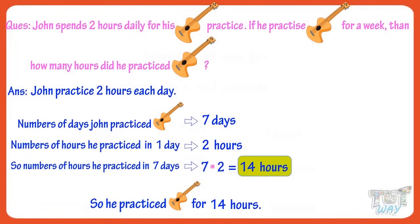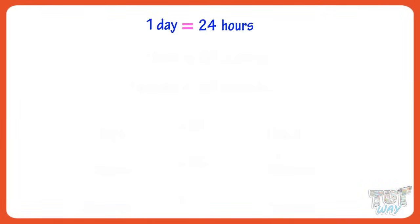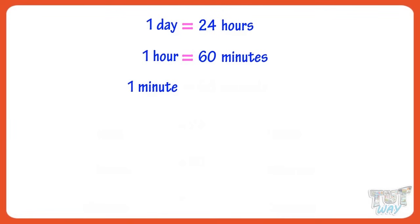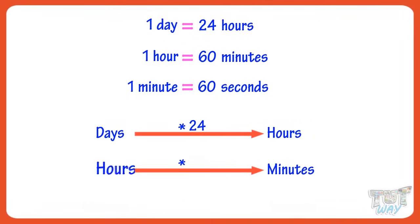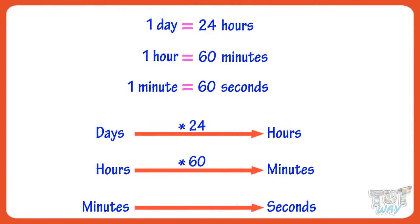So kids, today we learned that one day equals 24 hours, one hour equals 60 minutes, and one minute equals 60 seconds. To convert days to hours, we multiply days with 24. To convert hours to minutes, we multiply hours with 60. To convert minutes to seconds, we multiply minutes with 60.